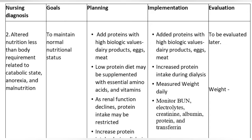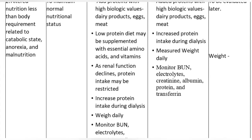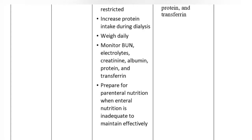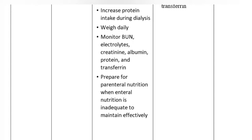Goal: To maintain normal nutritional status. Planning: Add proteins with high biologic values — dairy products, eggs, meat. Low-protein diet may be supplemented with essential amino acids and vitamins. As renal function declines, protein intake may be restricted. Increase protein intake during dialysis. Weigh daily. Monitor blood urea nitrogen, electrolytes, creatinine, albumin, protein, and transferrin.